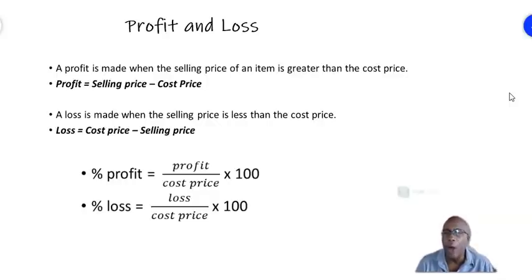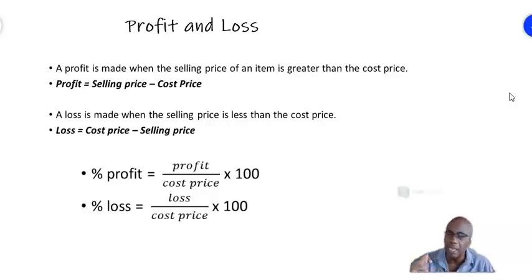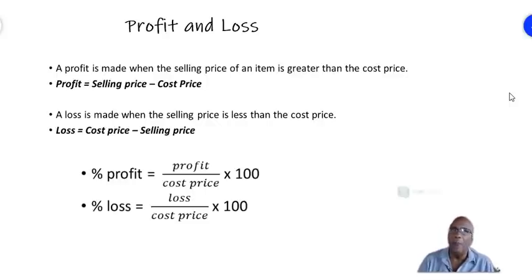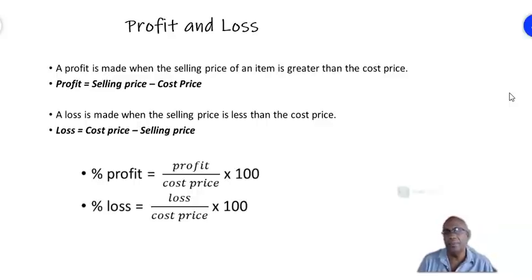Percentage profit is an important concept in maths. It is found by dividing the profit over the cost price — that's important, not the selling price — profit over cost price times 100. Likewise, the percentage loss is found by the loss over the cost price times 100 to convert to a percentage.